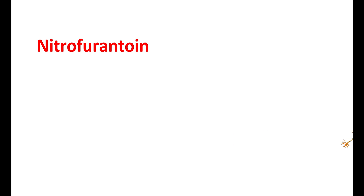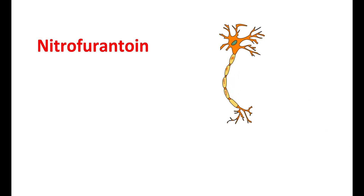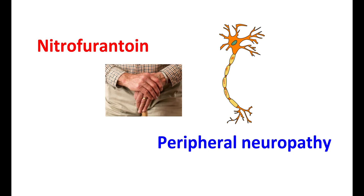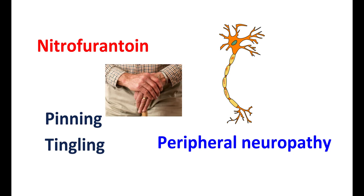Nitrofurantoin can also affect the function of your neurons. It can induce peripheral neuropathy, which results in loss of sensation, pinning and tingling sensation, particularly in the hands and feet. This may be severe in a few people and may become irreversible depending on risk factors.